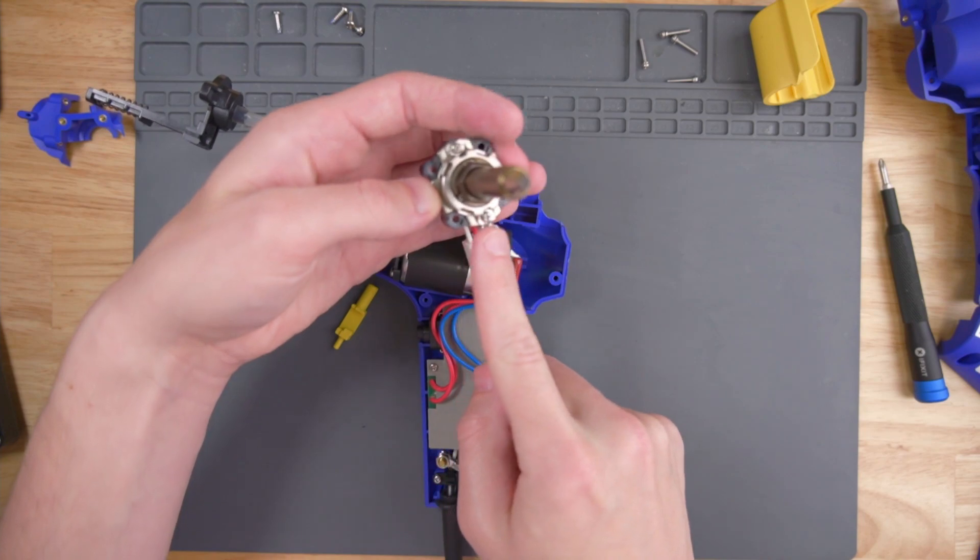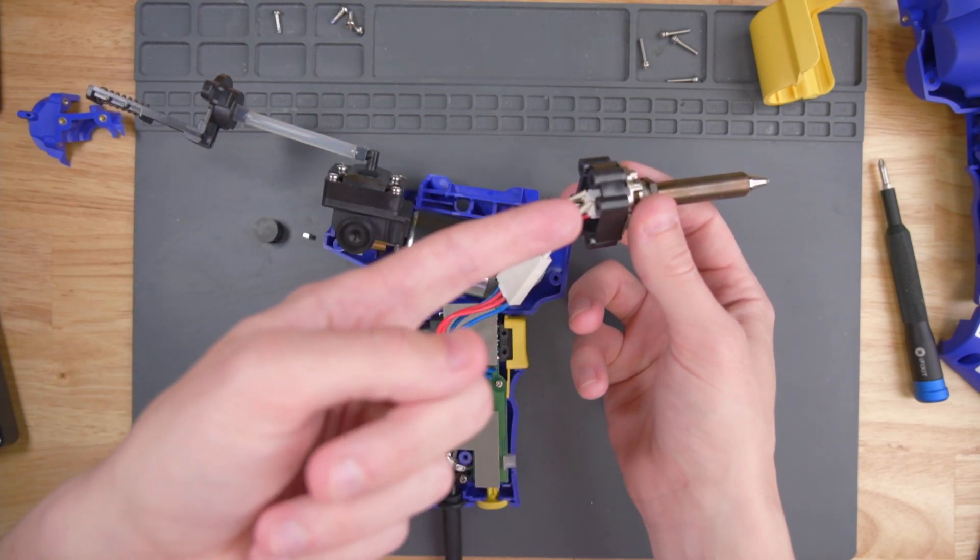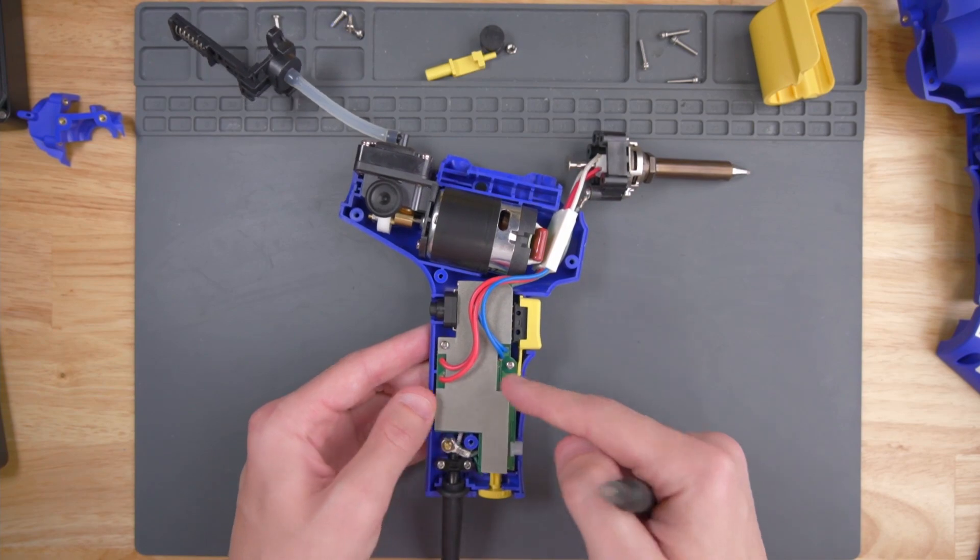There are two more screws here at the top and bottom of the nozzle that I don't think need to come off in order to replace the shell. Now let's try to take this PCB here out.